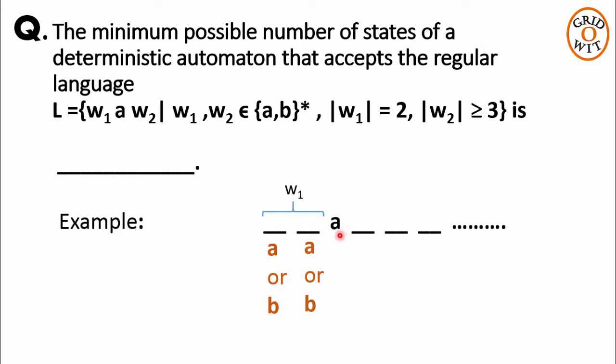On the right side of single a we have string w2. So we have fixed at least 3 positions and on each position we can have either a or b.